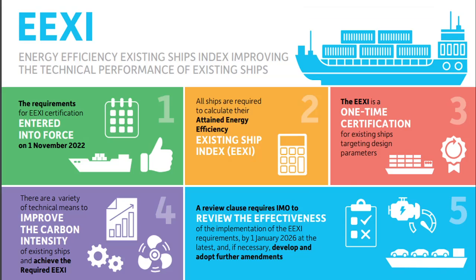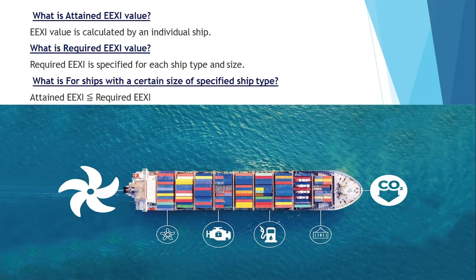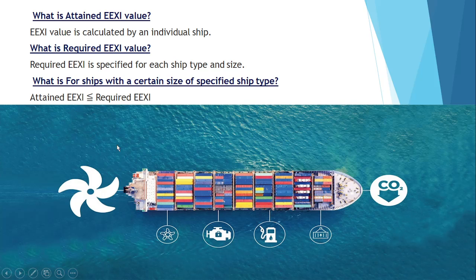So what is attained EEXI? Attained EEXI is the value calculated for an individual ship. What is required EEXI? Required EEXI is specified for each ship type and size. The main purpose is that the attained EEXI, calculated for an individual ship, should be less than or equal to the required EEXI specified by IMO for each ship type and size.